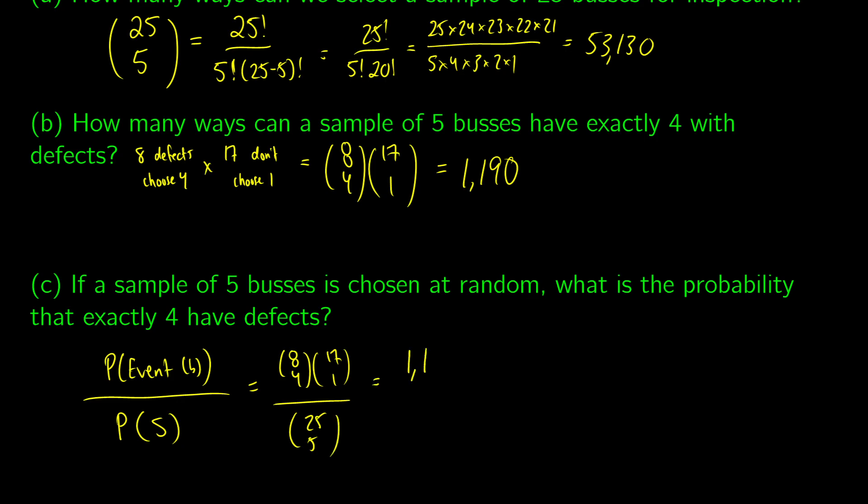So we know these numbers. There's 1,190 ways to choose four buses that have defects out of a sample of five. And there's 53,130 ways in order to choose five buses from a sample of 25. And eyeballing it, I don't remember the exact number.